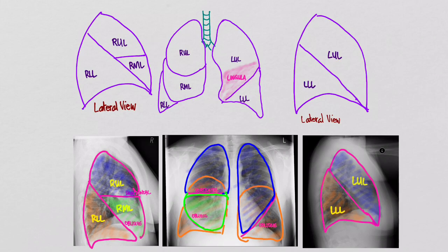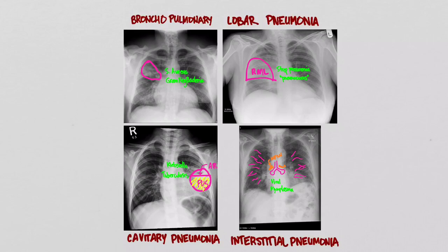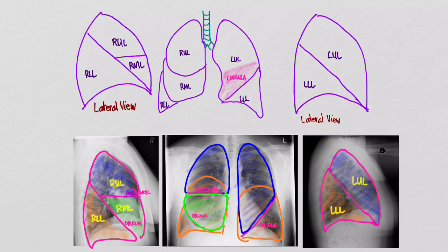That's our brief look at the different types of pneumonias. We looked at the four types — bronchopulmonary, lobar, cavitary, and interstitial — and we were also able to localize where the pneumonia might be by drawing the fissures in. Thanks for watching.